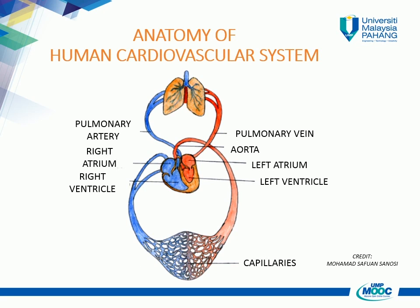Inside the blood, oxygen is carried by the hemoglobin in red blood cells. Blood circulates continuously round and round your body through an intricate series of tubes called blood vessels. Bright red, oxygen-rich blood is pumped from the left side of the heart through arteries and arterioles. Purplish-blue, low-oxygen blood returns to the right side of the heart through veins and venules. The heart is a powerful pump made almost entirely of muscle.